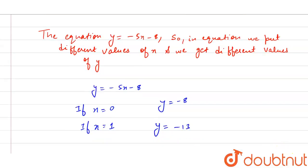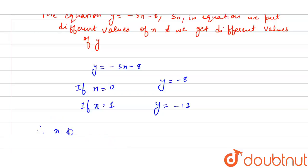From here we can say that x is our independent variable because we can put different values of x and then we get the value of y.